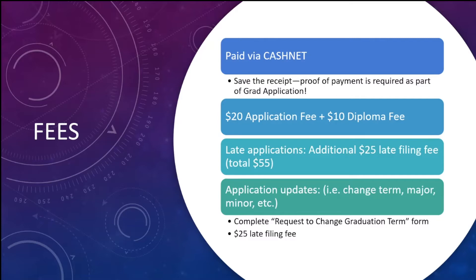If you do want to change your graduation term — say you're graduating spring but then you want to graduate in the fall instead — you will have to fill out an additional change graduation term form plus the change fee, and submit both to the grad office. This form is necessary because the graduation office puts a hold on your account so you can't enroll in classes for summer or the next fall. That form plus the fee is needed for them to release your enrollment so you can enroll in whichever semester you need.